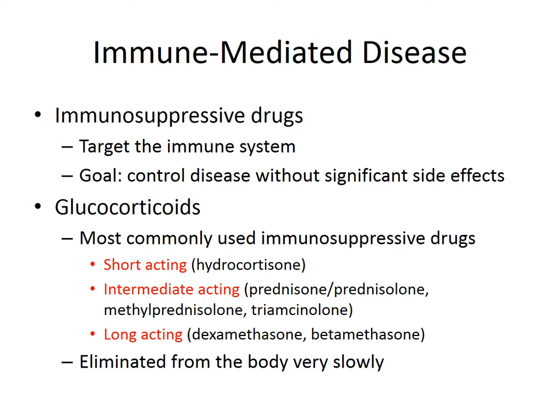There are short-acting steroids like hydrocortisone, intermediate-acting ones like prednisone and prednisolone, methylprednisolone, and triamcinolone — given orally or in topical preparations. Long-acting steroids include dexamethasone, commonly used injectably and usually given once a day. Betamethasone is used in a lot of topical preparations for skin, ear, and sometimes eye medications to tone down inflammation. Glucocorticoids are generally eliminated from the body quite slowly, which is important to remember.